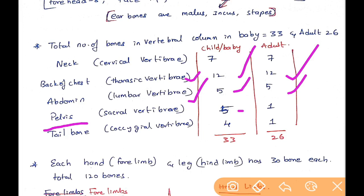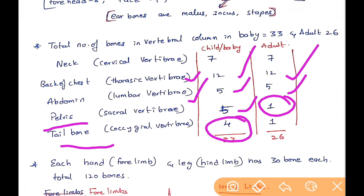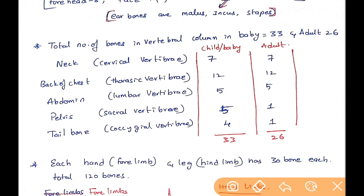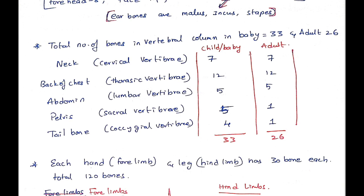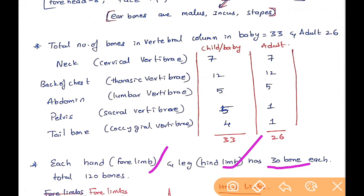Near the abdomen there are 5 lumbar vertebrae. In the pelvis there are 5 bones in a child, and in the tailbone there are 4 bones in a child. As the baby grows into an adult, these bones fuse together to form only one bone each — this is how 300 bones reduce to 206 in adults.